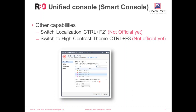Localization support within Smart Console is planned but not yet official. Using the right control key plus F2, you can switch to different localization themes; using right control plus F3 switches to the high contrast theme. There are some minor fixes still needed for these features, so they are not official yet, but you can try them.